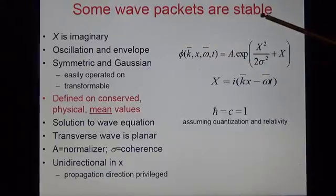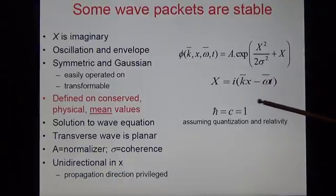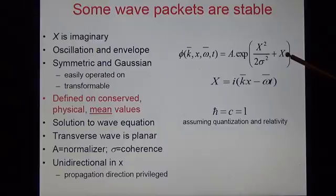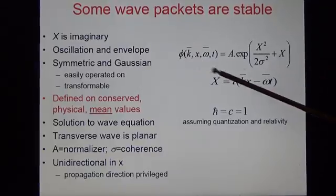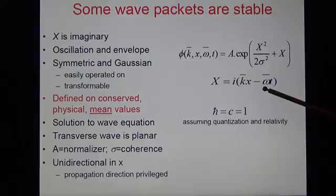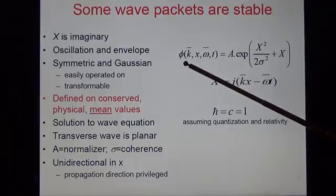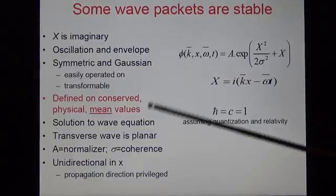You can see that some wave packets are stable from the following formula. Phi is a function of a space-time variable that is imaginary that causes phi to oscillate inside a symmetric envelope. This particular envelope is Gaussian with a coherence sigma, an important property. Phi is defined on the mean wave vector k and the mean angular frequency omega. These are each of them and both of them conserved physical quantities making phi perfectly stable. We've written phi in terms of simplified units. Phi is a solution to the wave equation.